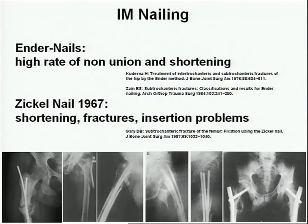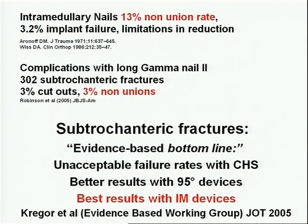With IM nailing, the first results were not as good as expected with Ender nails — there were high non-union and shortening rates because they weren't stable enough. The sickle nail had many reports of iatrogenic fractures on insertion and shortening. In the early days, intramedullary nails showed a comparable non-union rate to plates.